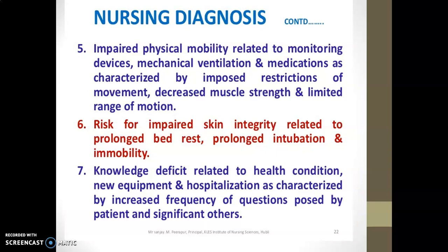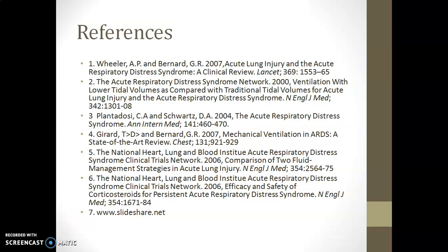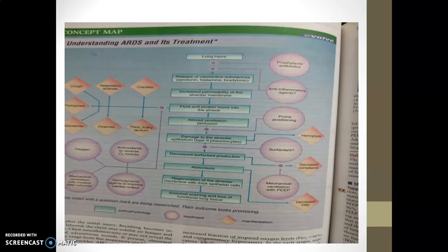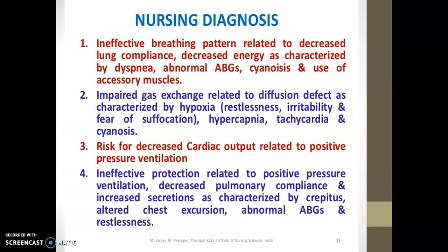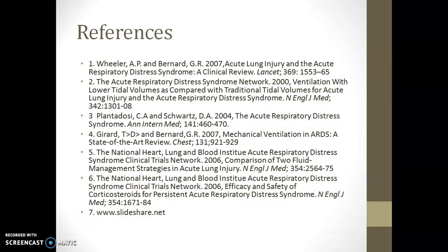To conclude, today we studied the definition, etiology, types of clinical manifestations, how to diagnose ARDS, first-line treatment, ventilator settings including PEEP, FiO2, and tidal volume, and nursing diagnoses. Your assignment is to write priority-wise nursing interventions for the patient with ARDS from the seven nursing diagnoses provided, with at least five nursing interventions for each diagnosis. If you have any questions, kindly contact me. Thank you and have a nice day.